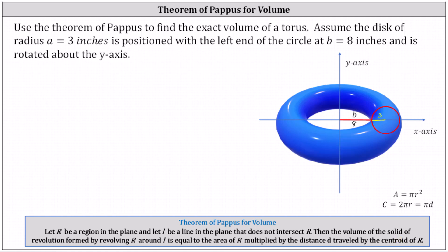To determine the volume, we first have to determine the area of the circle, then we have to determine the centroid of the circle — which is simply the center of the circle — and then determine the distance D the centroid travels when rotated about the y-axis.